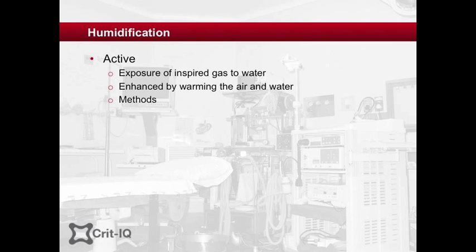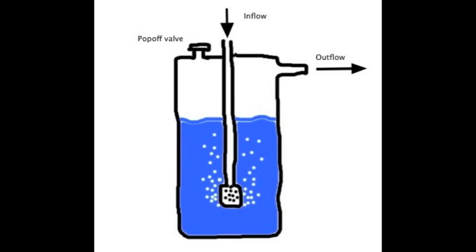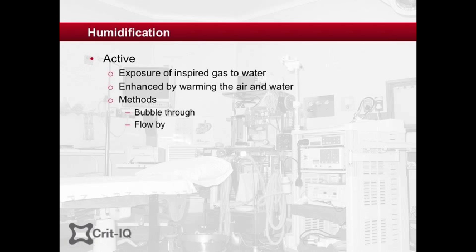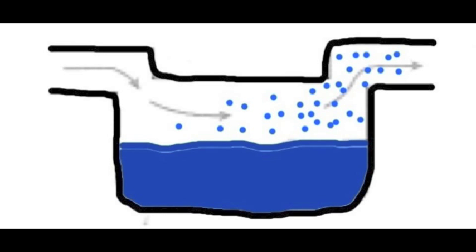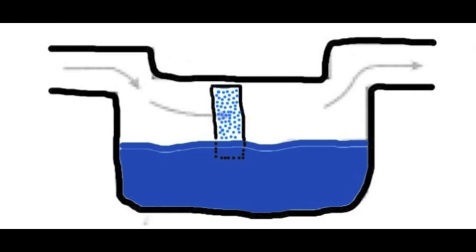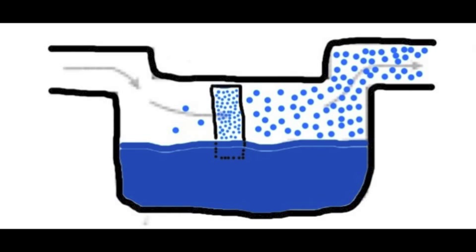Two basic forms include the bubble-through and the flow-by mechanisms. In the former, the air flow is actively bubbled through a diffuser in a chamber of warmed sterile water. They are limited by the flow that can be facilitated, so are generally not suitable for mechanical ventilators. In the latter mechanism, the air flow passes over a bath of heated sterile water, picking up moisture and warmth as it goes. The addition of a thin, permeable, adsorbent material known as a wick significantly increases the efficiency of this type of humidifier.